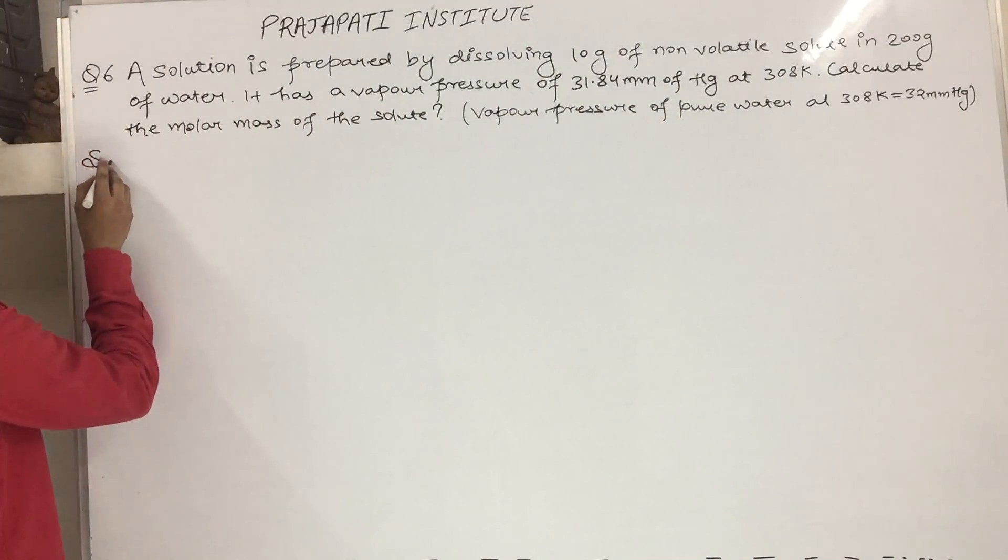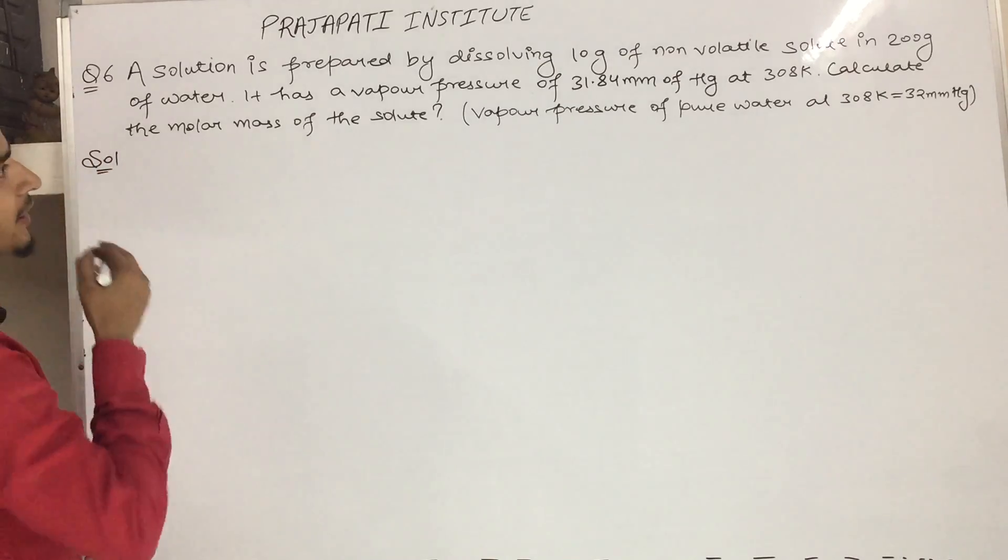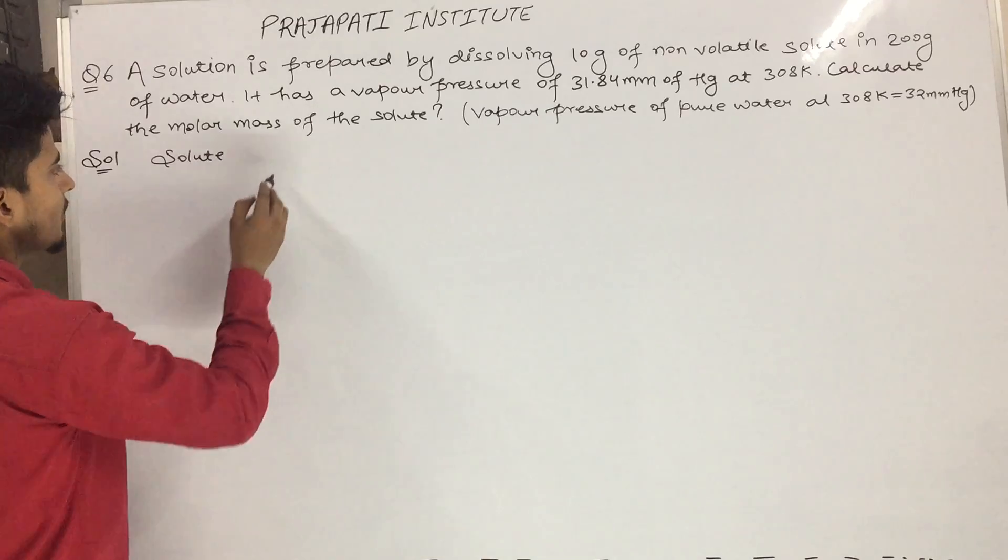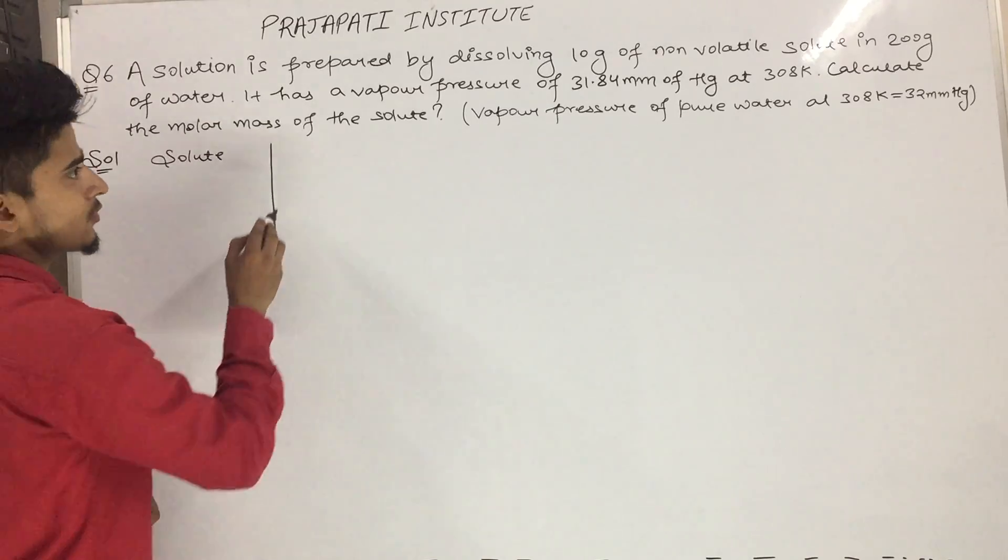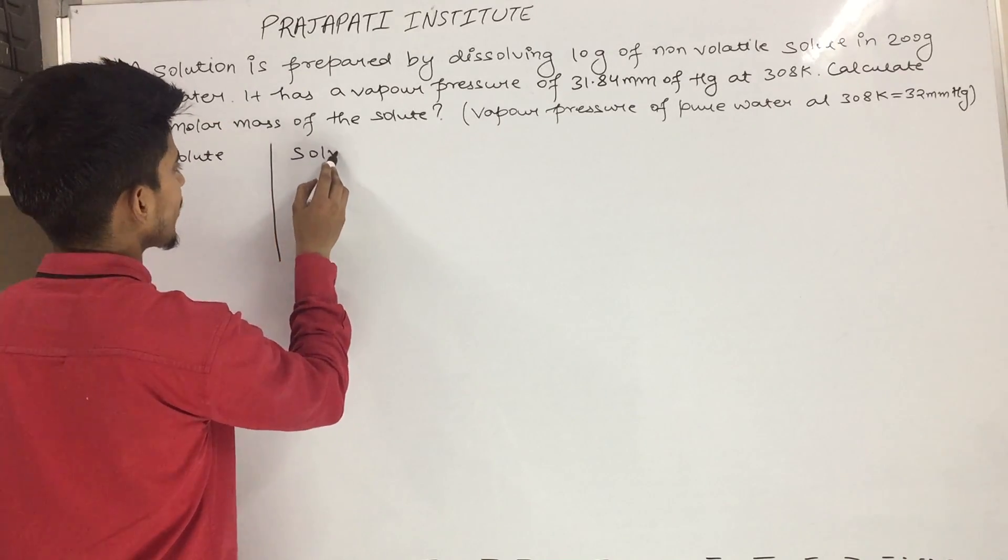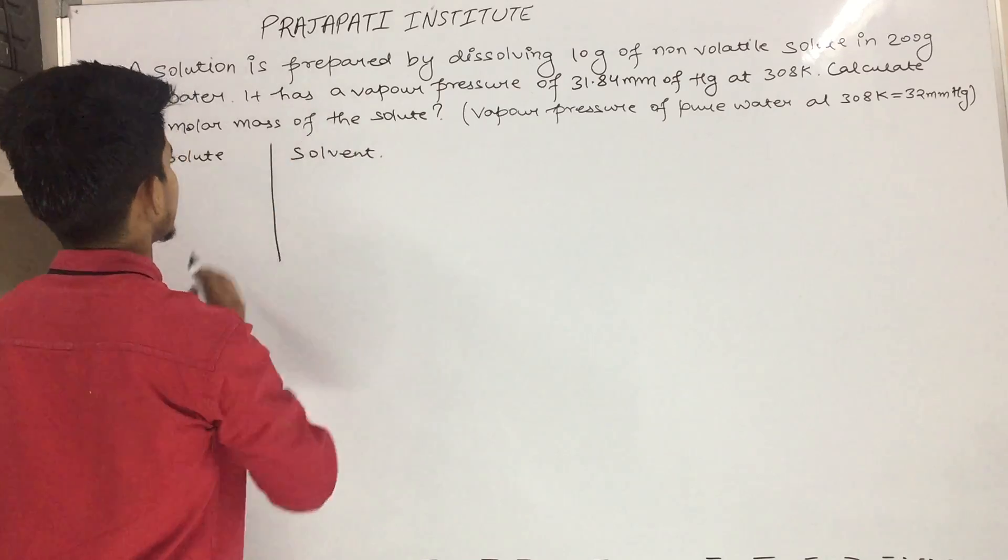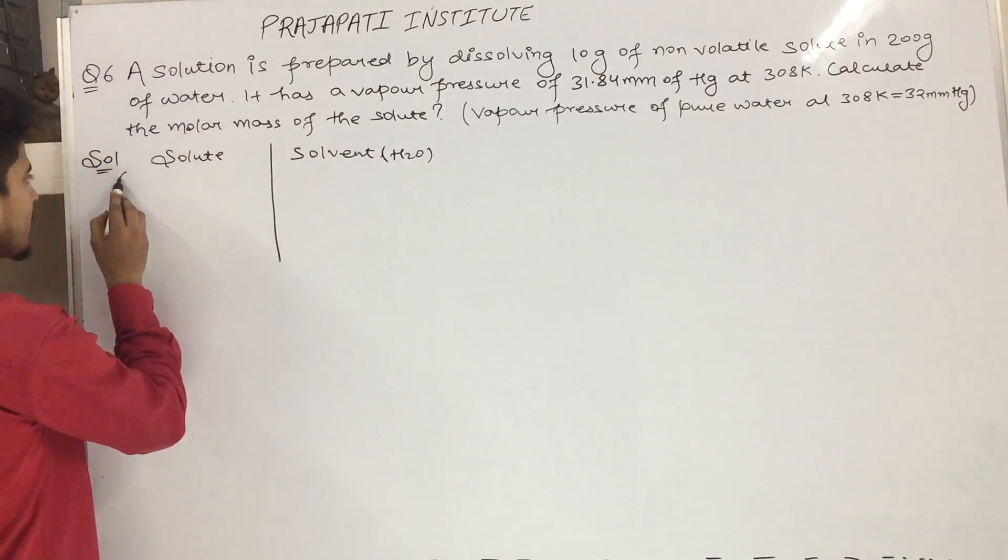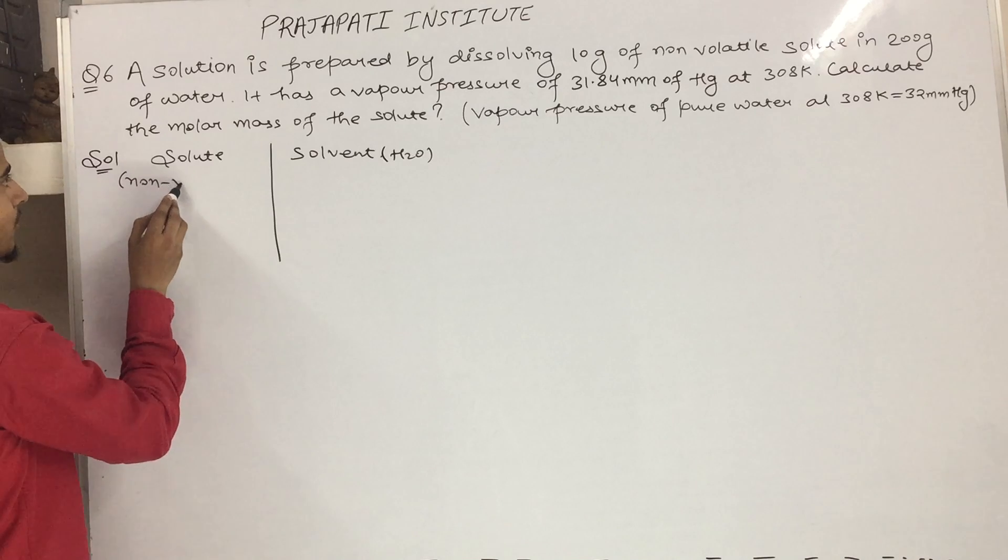First, let's write the given values. What is given? Solute is non-volatile. Solvent is water.